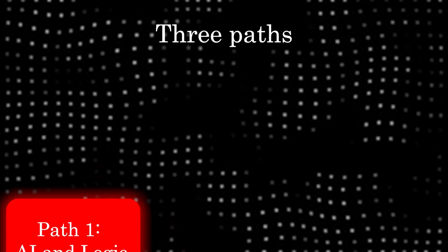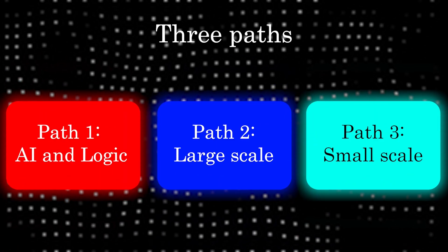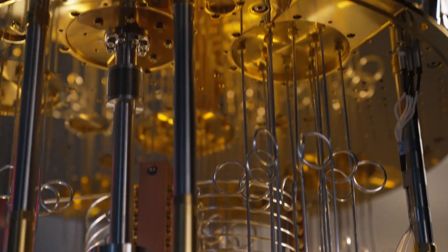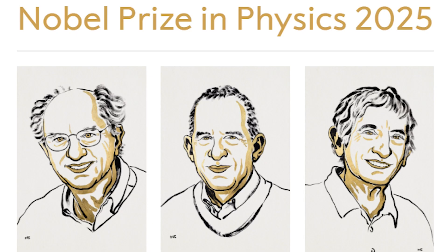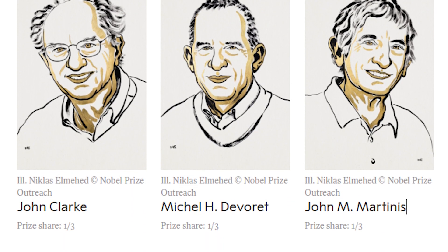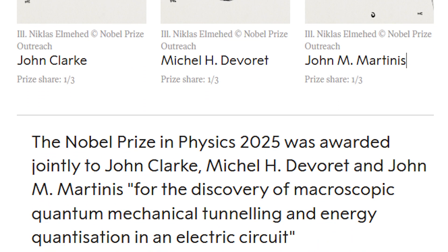Each scale of nature reveals a new layer of reality. And to push technology forward, we have to master that layer. That's why quantum computing matters — it's the frontier of physics at the smallest scales we've ever explored. And fittingly, this year's Nobel Prize in Physics went to the pioneers of superconducting qubits, one of the leading platforms for quantum computers.